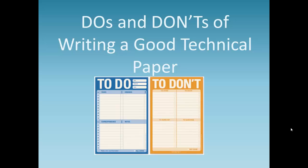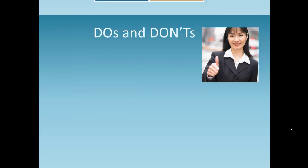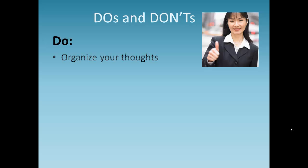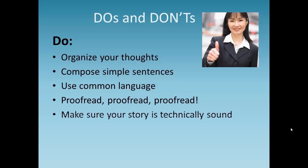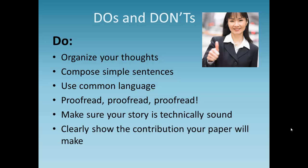Now, let's discuss some do's and don'ts of writing a good technical paper. Do organize your thoughts, compose simple sentences, and use common language. Industry terminology is fine, but steer away from company lingo. Proofread, proofread, and proofread some more. Make sure your story is technically sound. Finally, clearly show the contribution your paper will make.